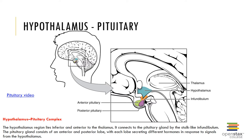The hypothalamus-pituitary complex is an important connection. The hypothalamus lies inferior and anterior to the thalamus and connects to the pituitary via the infundibulum. The pituitary gland consists of an anterior and posterior lobe and is also known as the master gland, located within the sella turcica of the sphenoid bone, connected to the hypothalamus via the infundibulum and a network of capillaries called the hypophyseal portal system.